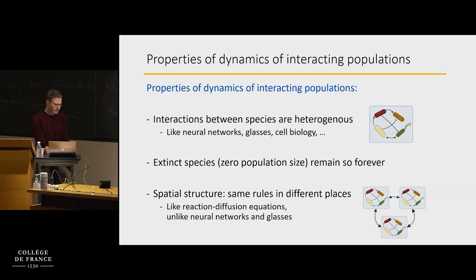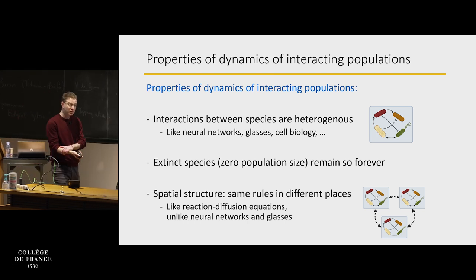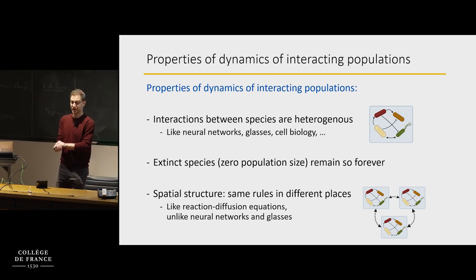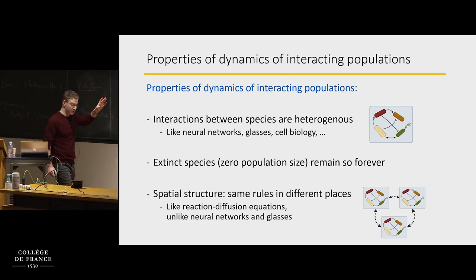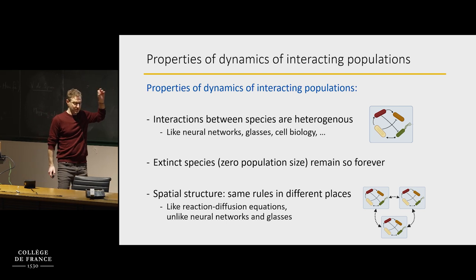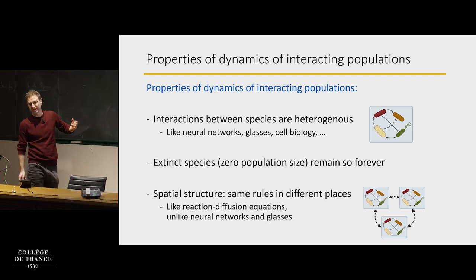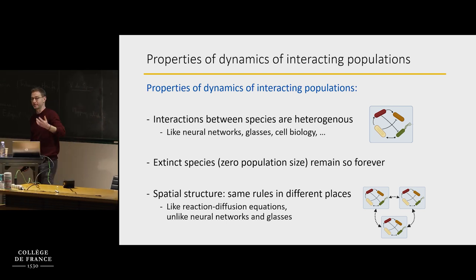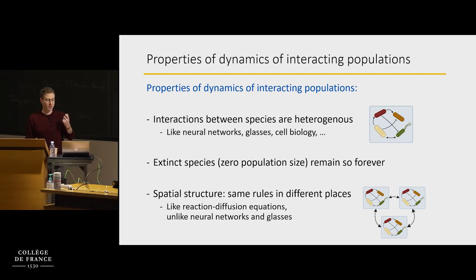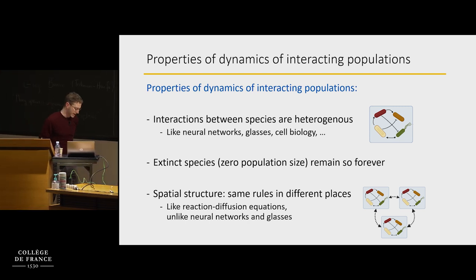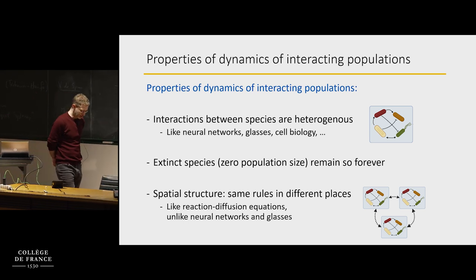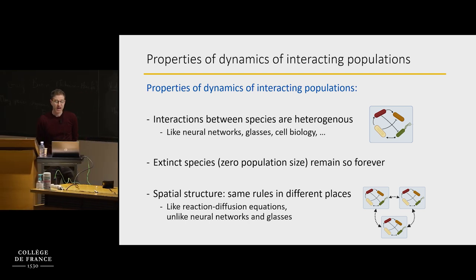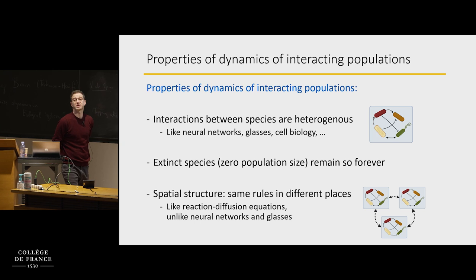I want to tell you about how people model interactions and dynamics in interacting populations. I want to focus on the set of properties we want to capture when talking about dynamics of interacting populations. One thing is that the interactions are heterogeneous — every pair of species might have a different interaction.